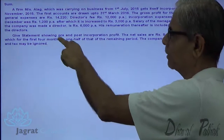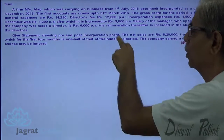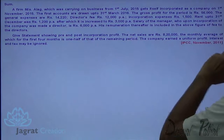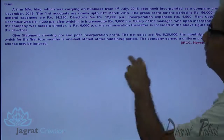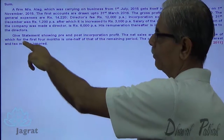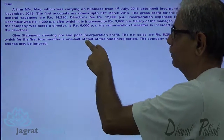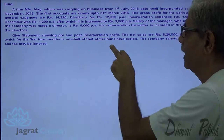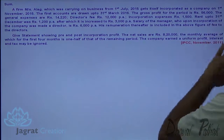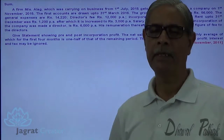Give a statement showing pre and post incorporation profit. Net sales is 8,20,000. Monthly average for the first 4 months is one half of that of the remaining period. The company earned uniform profit. Interest and tax may be ignored.